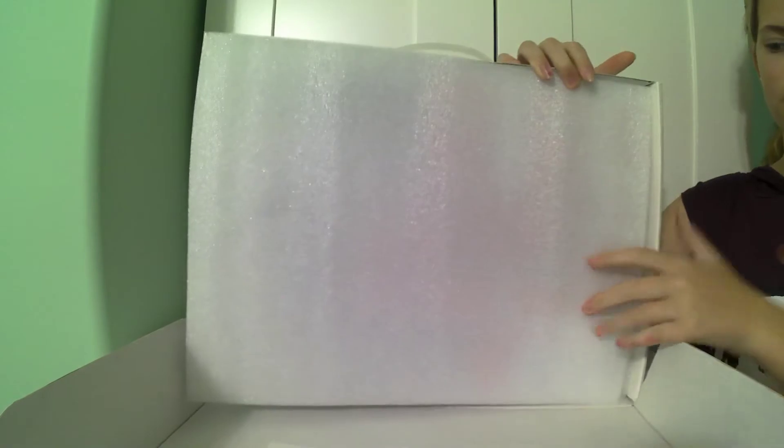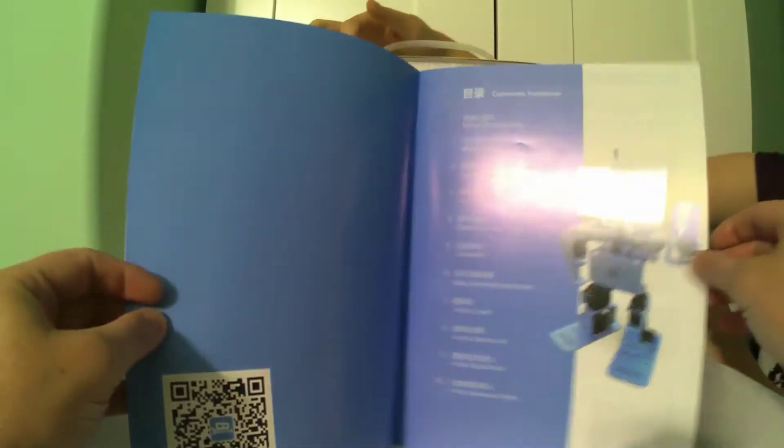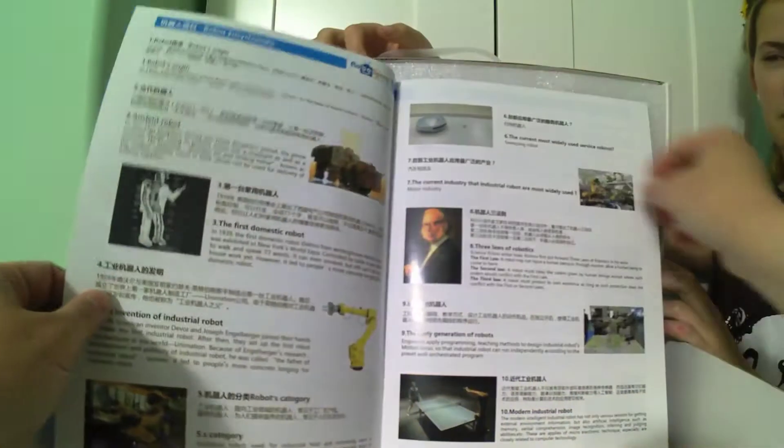Inside we have an instruction manual. The instruction manual starts off with kind of a robot encyclopedia, so the history of robots.